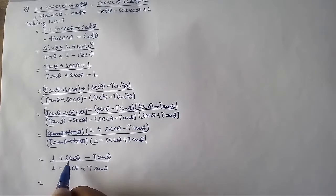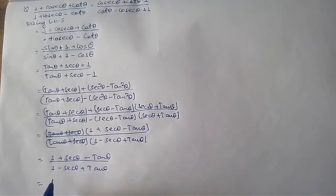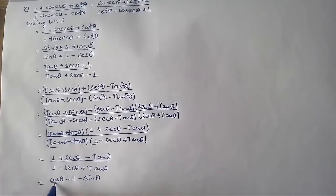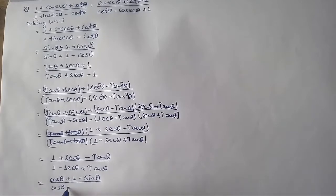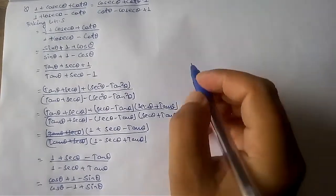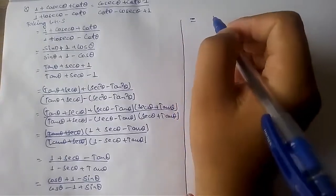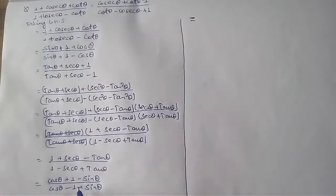What we do next is change sec back in terms of cos, and sin over cos. If we take the LCM, we get cos theta plus 1 minus sine theta divided by cos theta minus 1 plus sine theta.